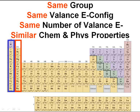Before we get into the lesson, just a quick reminder: elements that are in the same group — groups are my vertical columns — have the same valence electron configuration, therefore the same number of valence electrons. Because they have the same number of valence electrons, elements in that group will have similar chemical and physical properties.